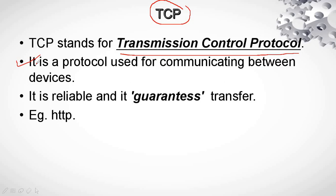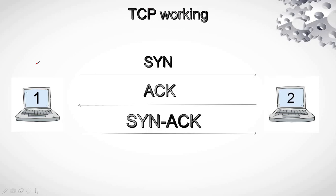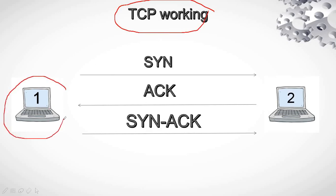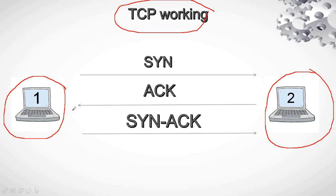Now let's have a look at how it functions. Here we have a TCP working pictorial demonstration. Let's say you are operating PC1 and your friend is operating PC2. These two might be in the same LAN network or anywhere within the world. Both of your computers must be connected to the internet one way or another.